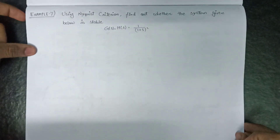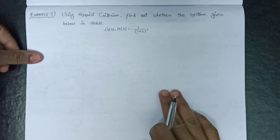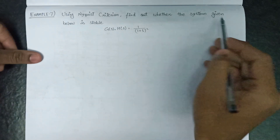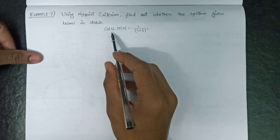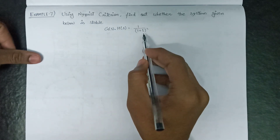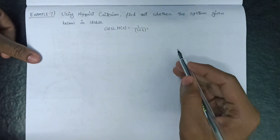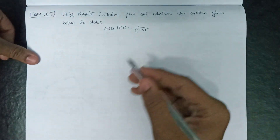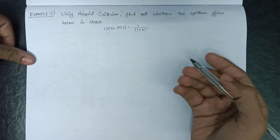Welcome all. In this lecture we are going to solve an example based on Nyquist criteria. Using Nyquist criteria, find out whether the system given is stable or not. We need to check that our system G(s)H(s) = 1 / (s+1)^2 is stable or not by plotting the Nyquist plot. Let's follow all 5 steps discussed in earlier lectures.